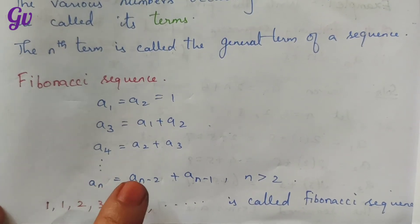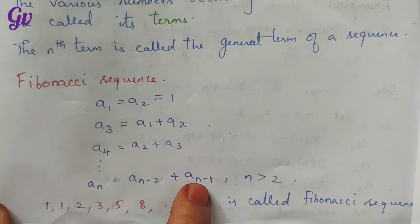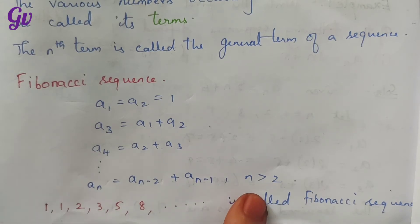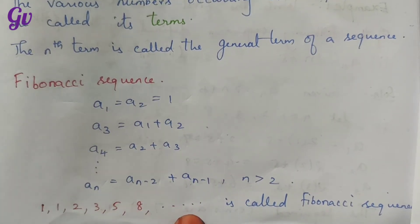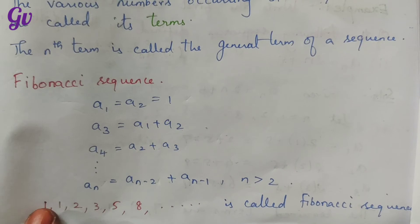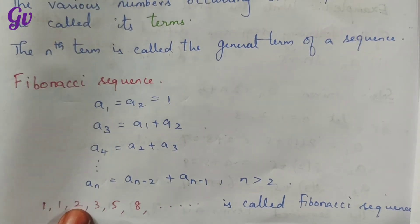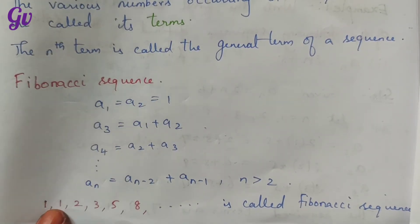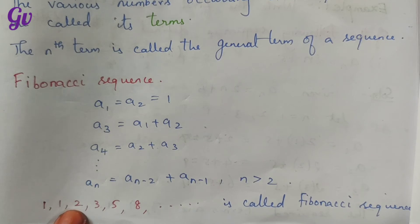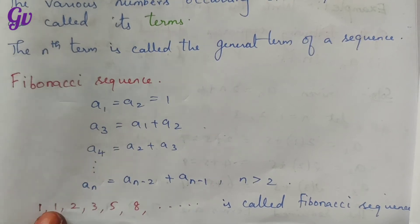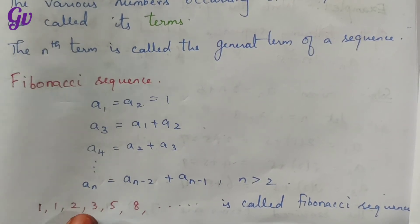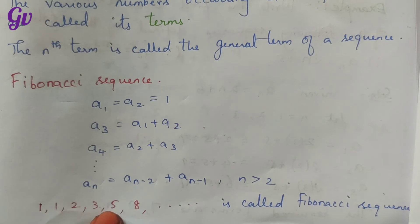For the last term, we write an equal to an minus 2 plus an minus 1, for n greater than 2. So this is the formula. The first two terms are 1, 1. Then the third term is 1 plus 1 equals 2. Then 1 plus 2 equals 3. Then 2 plus 3 equals 5. Then 3 plus 5 equals 8. These are the terms of this recursive sequence.